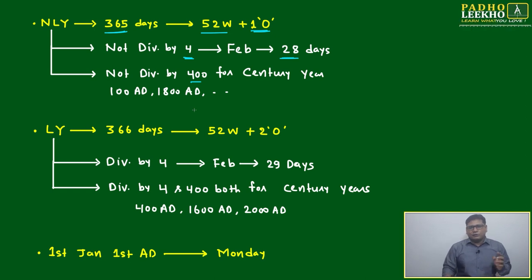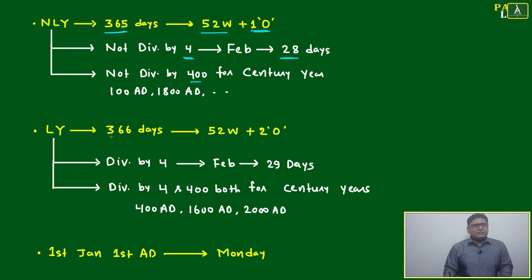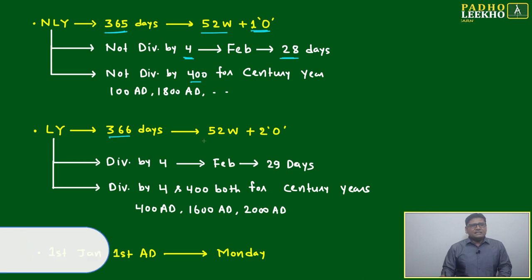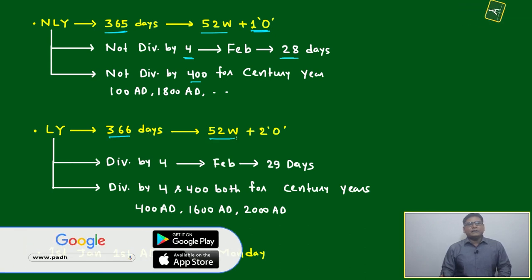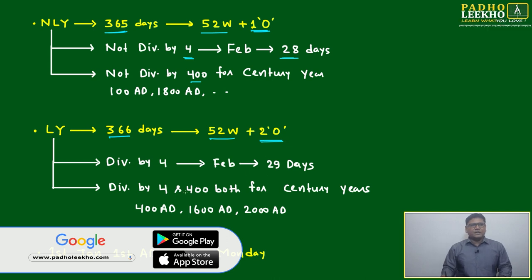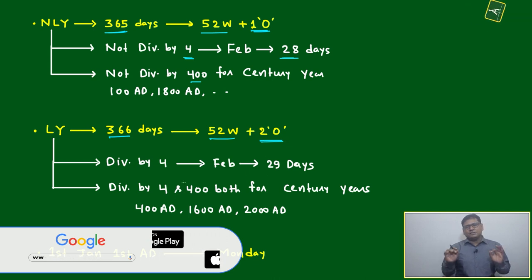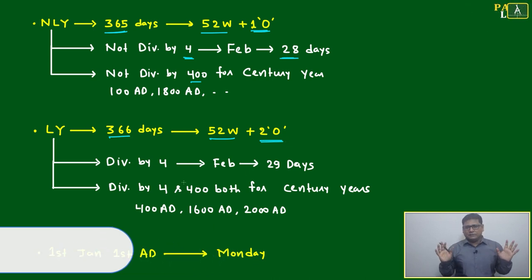For a leap year it is 366 days. Dividing 366 by seven again gives 52 weeks and two odd days. So a leap year has two odd days. Keep this in mind.